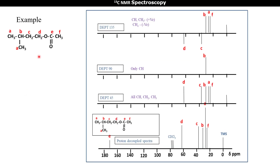Now we see an example. There are six sets of carbon atoms (one through six). In the normal proton-decoupled spectrum, signals of all carbon atoms A, B, C, D, E, and F are seen. Among these, carbon E is a quaternary carbon, carbon A is primary (CH3), carbon F is also primary (CH3), and the remaining are CH2 groups. In DEPT 45, signals of all CH, CH2, and CH3 carbon atoms are seen in positive phase.